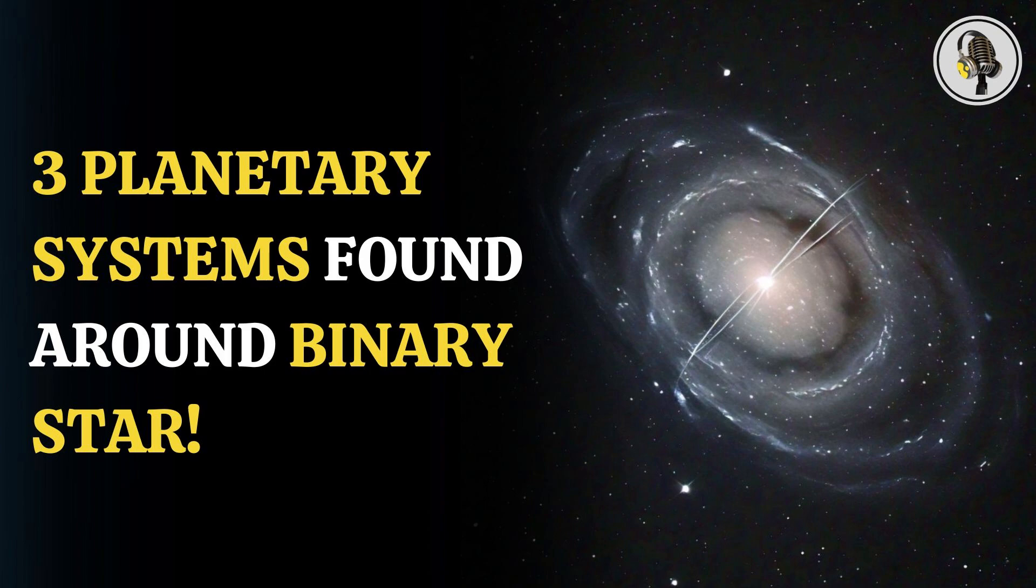This outer disk shows a spiral structure that is feeding matter into the individual disks, and in all of them, planetary systems could form in the future.